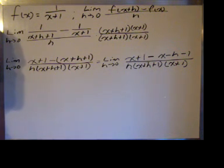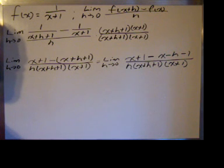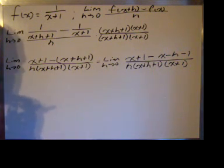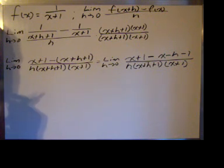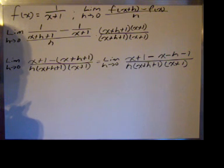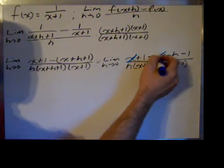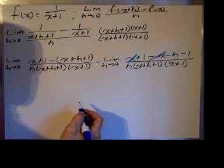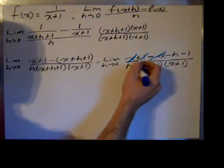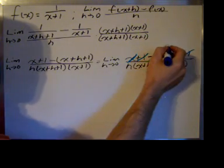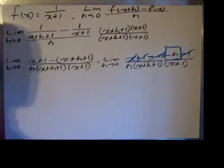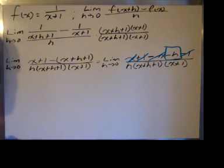Notice the numerator — terms will cancel, and they should. If you end up, when you simplify the numerator, left with anything without an h attached to it, something's wrong — go back and check. We have the x's cancel: x minus x is 0, 1 minus 1 is 0, and we're left with negative h in the numerator.